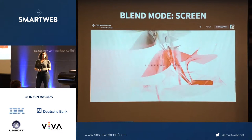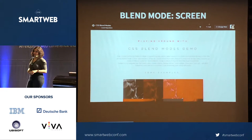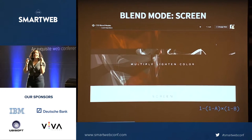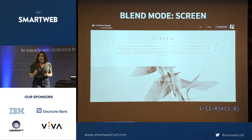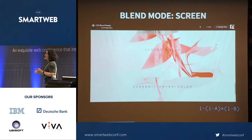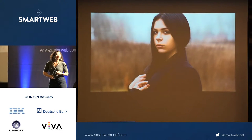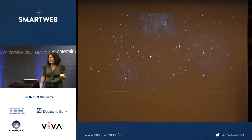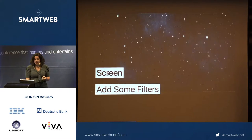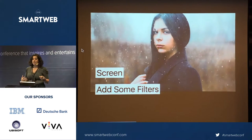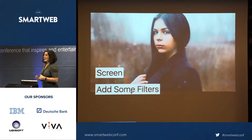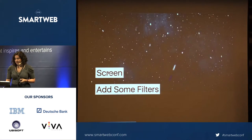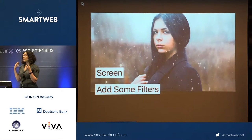The next blend mode is screen, which works as the exact opposite of multiply. We take inverses by subtracting values from one. We take the inverse of the active layer's luminosity value, multiply it by the inverse of the background layer's luminosity value, and then invert that — it's like multiplying the light pixels. With blend modes you can use them with various elements. Here's a portrait with snow applied using screen — we can apply filters, make it blurry, increase the brightness, make it darker, and this is all something your user can interact with dynamically.